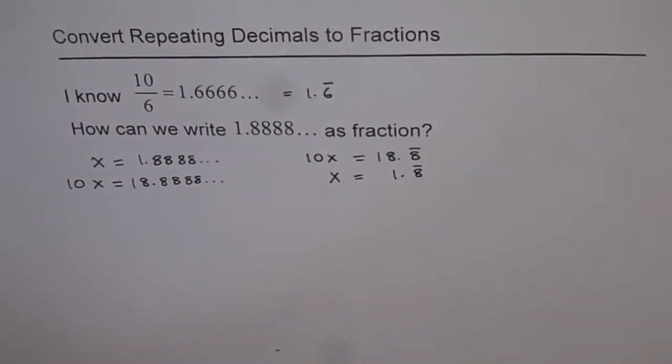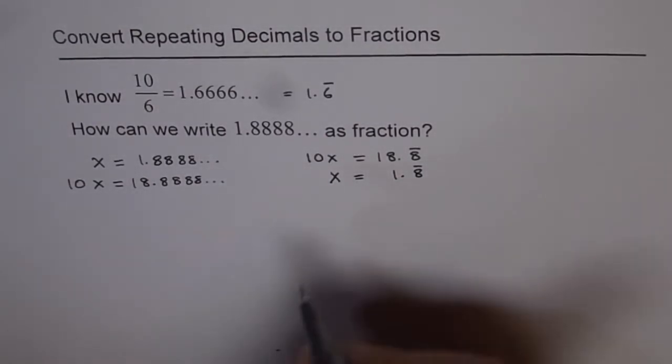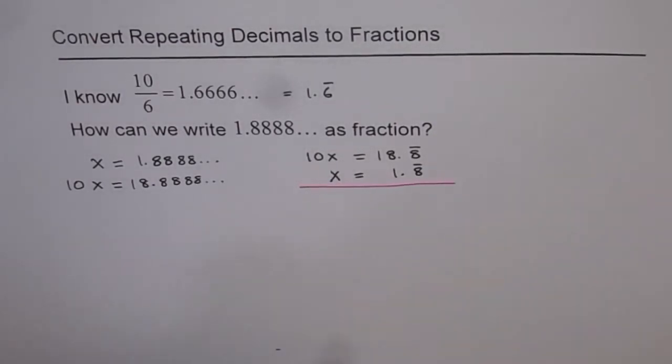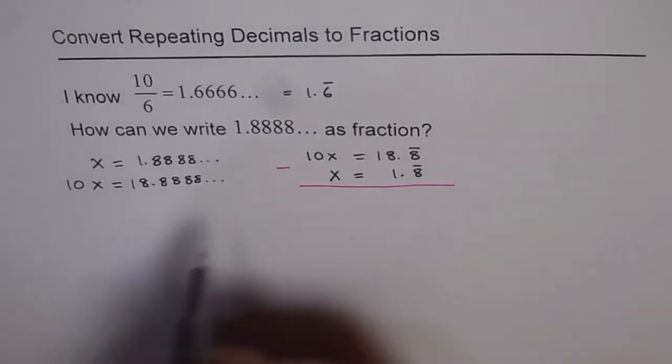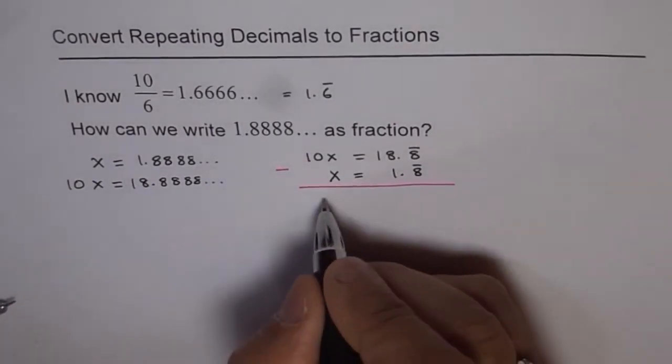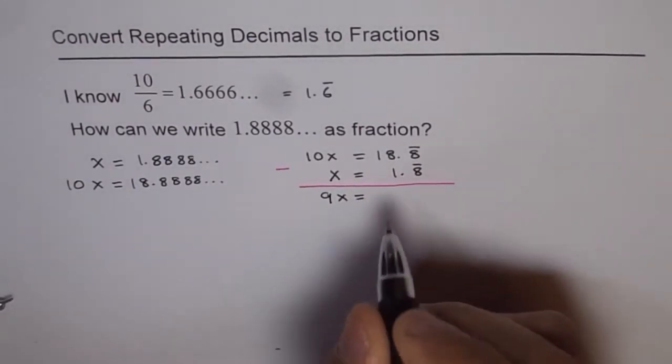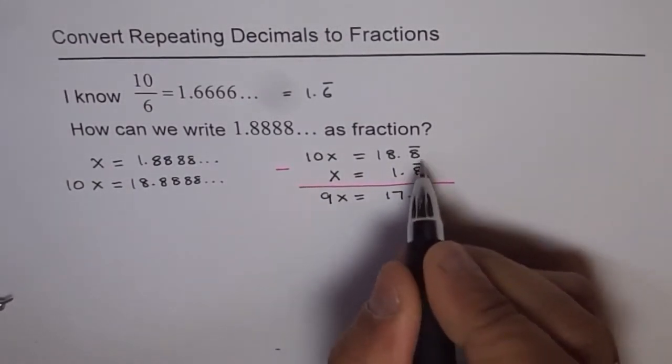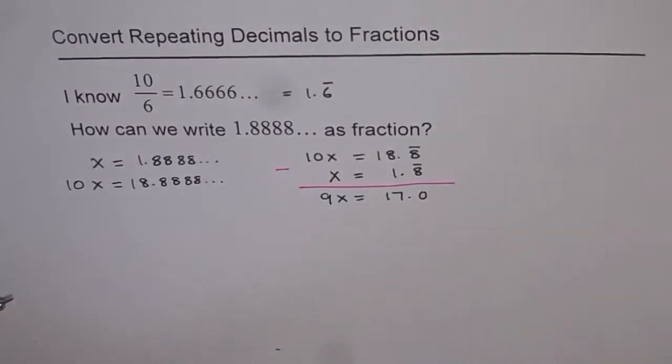Now if I take away x from 10x, what do I get? I'm taking away this. So what I get is 9x equals 18 take away 1, which is 17.0. All these decimal places will be 0.